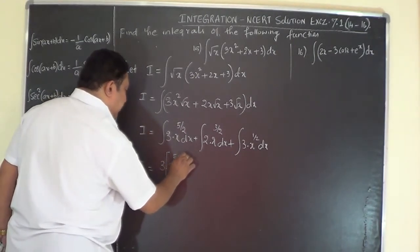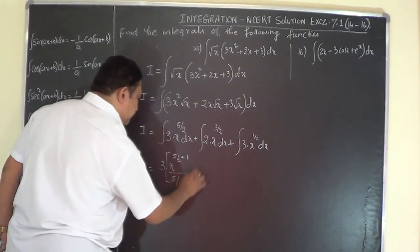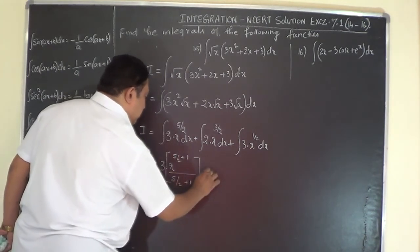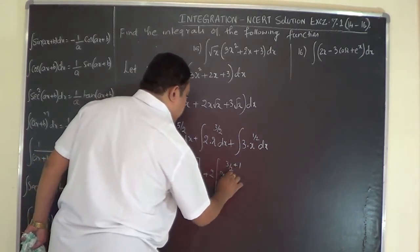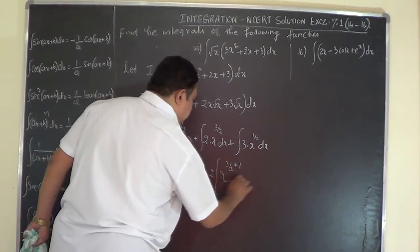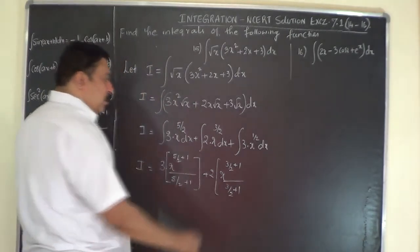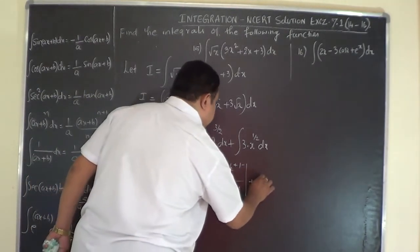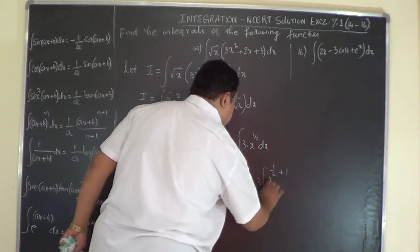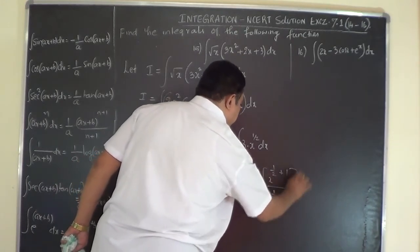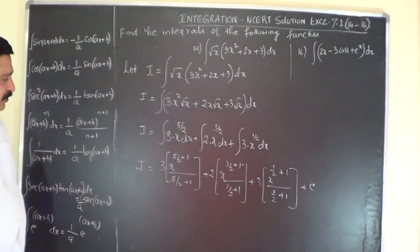Integrating x^(5/2): x^(5/2 + 1) / (5/2 + 1), plus 2 times x^(3/2 + 1) / (3/2 + 1), using the power rule of integration, plus 3 into x^(1/2 + 1) / (1/2 + 1), plus the constant of integration C.